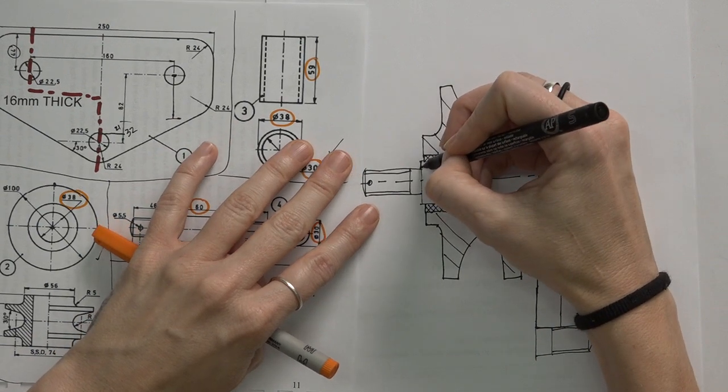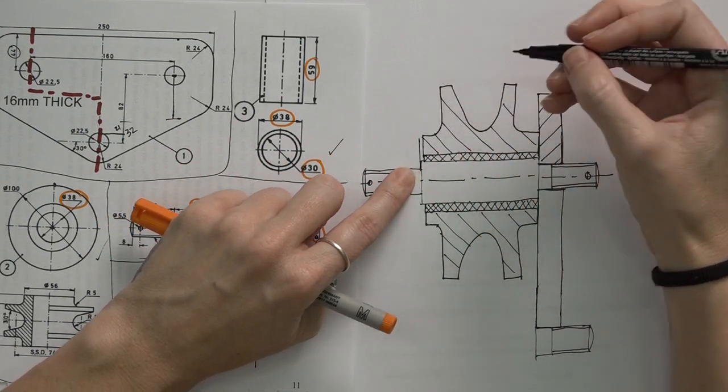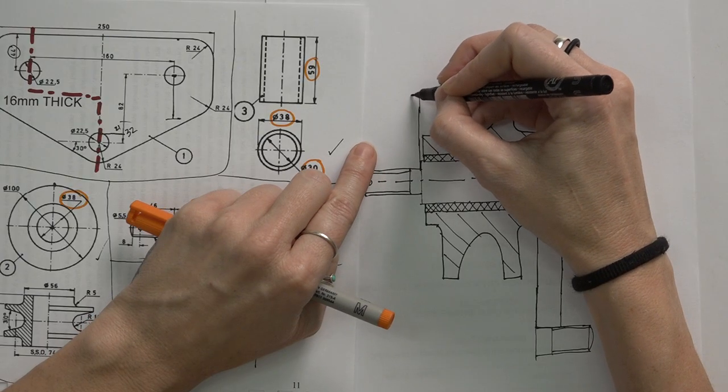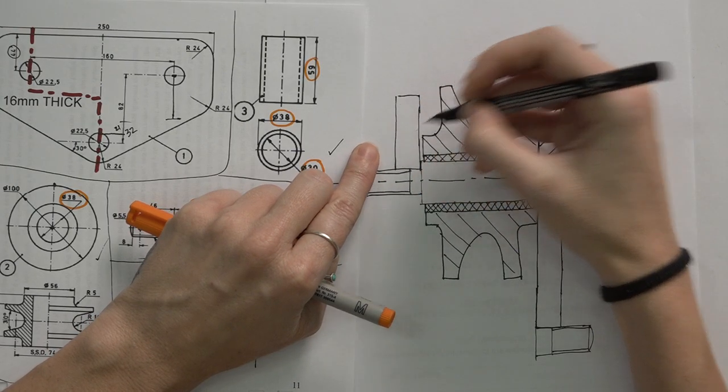And on this side, the housing will look exactly the same, keeping in mind that we have our gap here. So we can already draw in our housing on both sides.